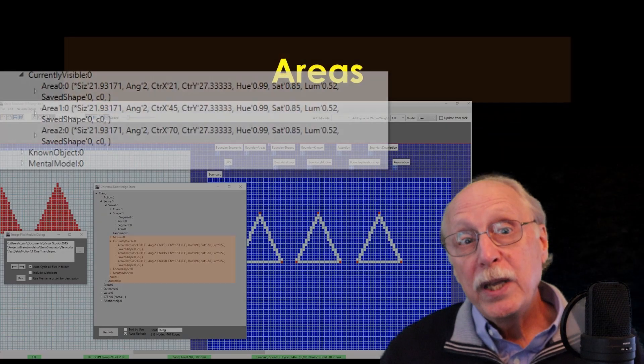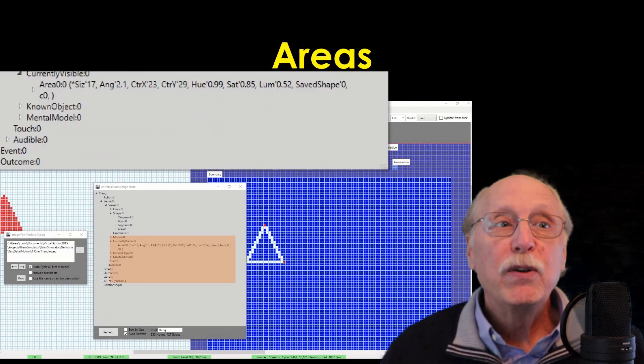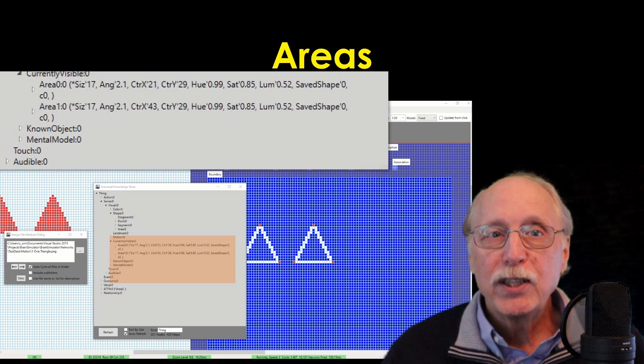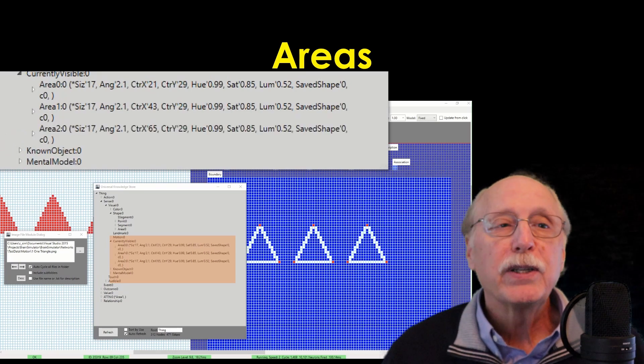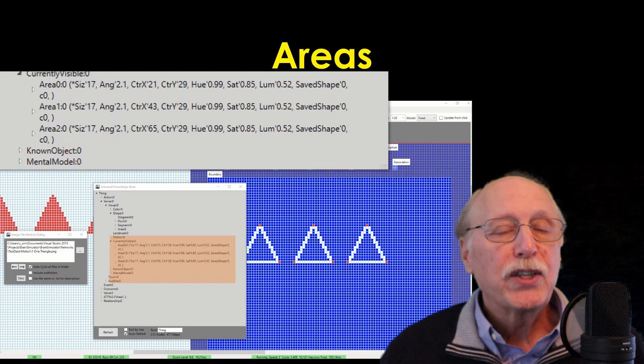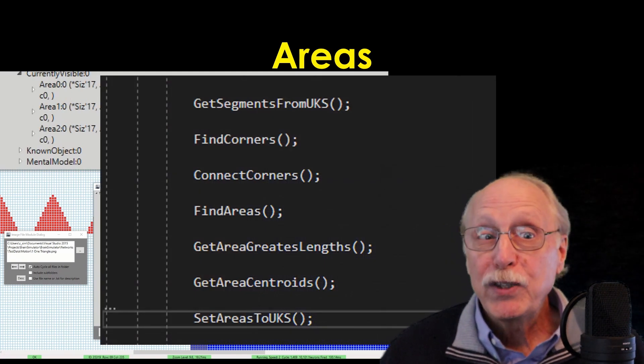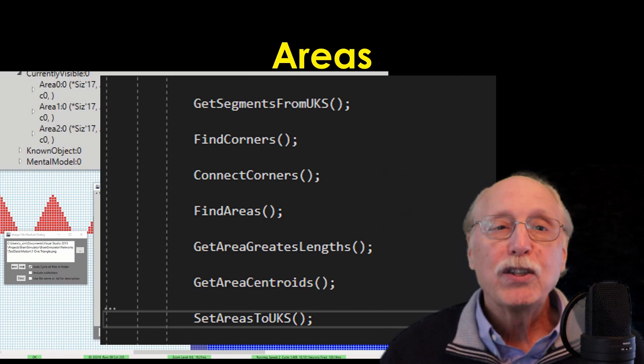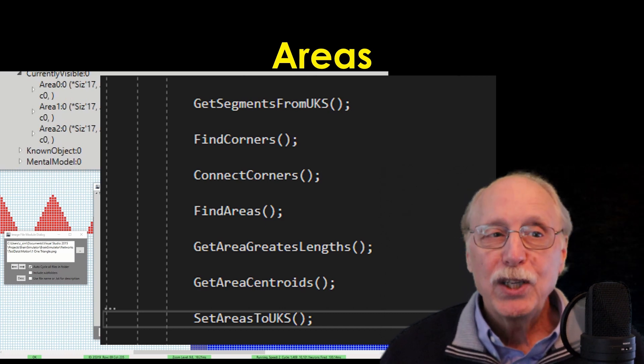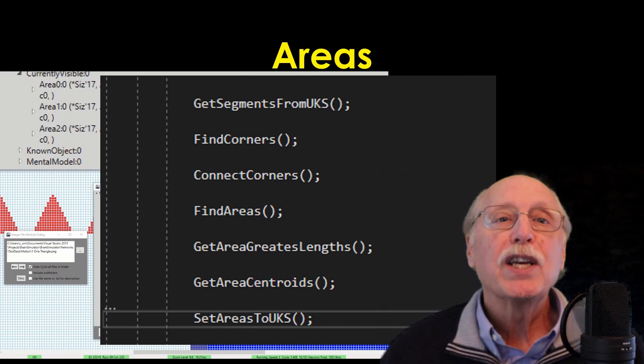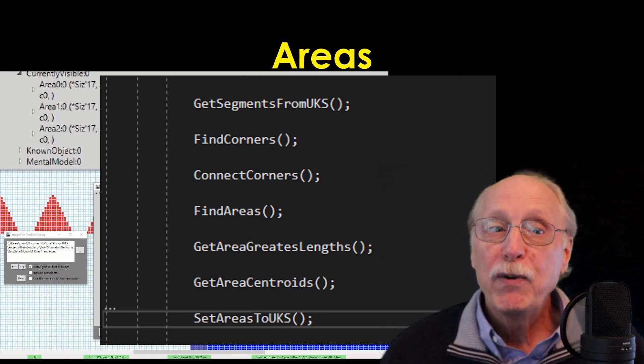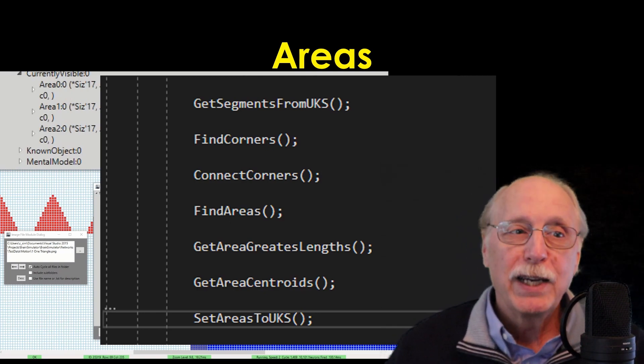Areas: In this view of the UKS, you can see areas being added as they are detected in the visual field. To give you an idea of the process in this step, here is the module code which gets the segments from the UKS, finds corners, merges the segments into areas, and estimates a size, center, and color for each before writing the areas to the UKS.